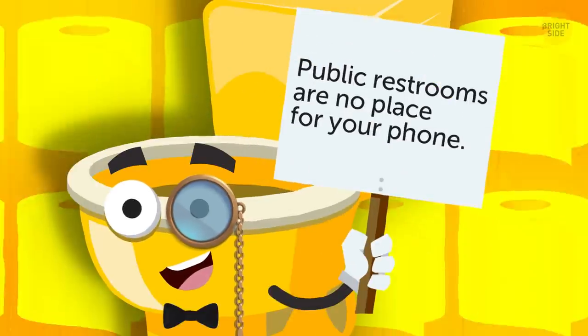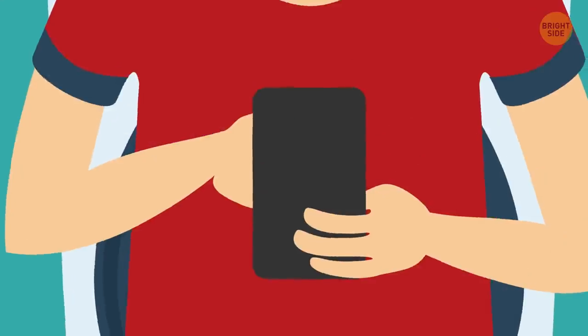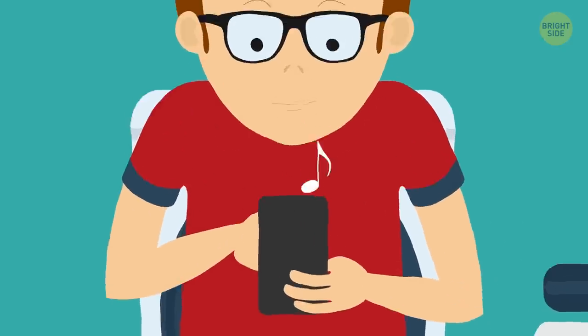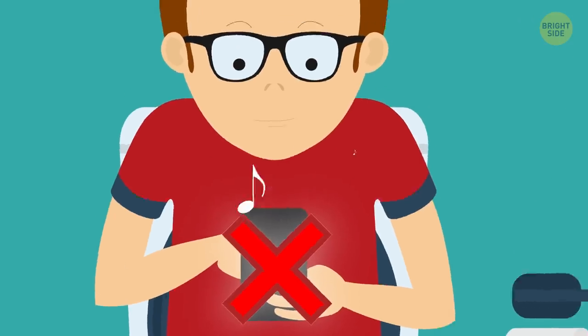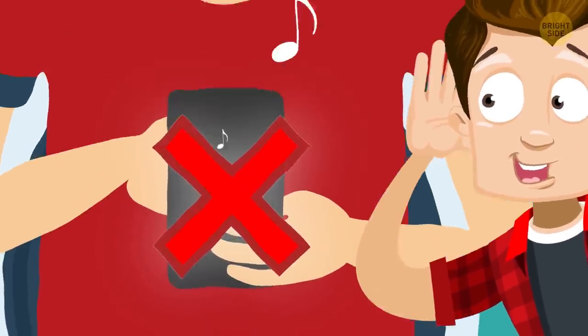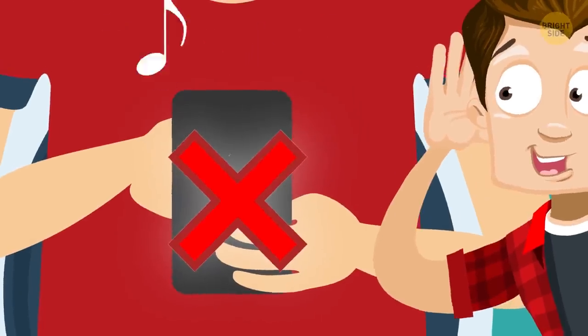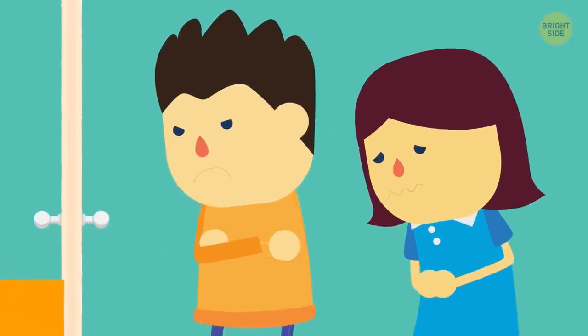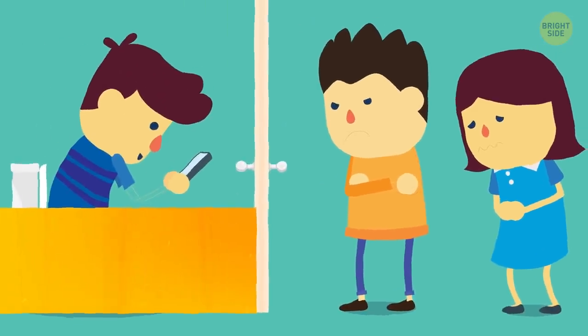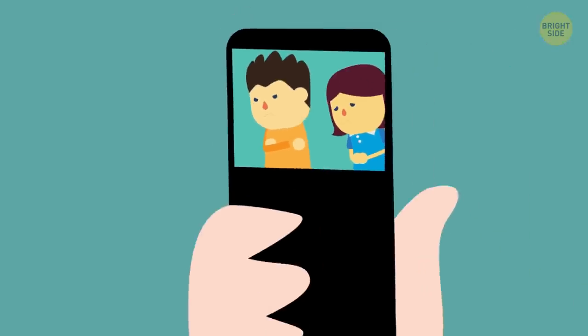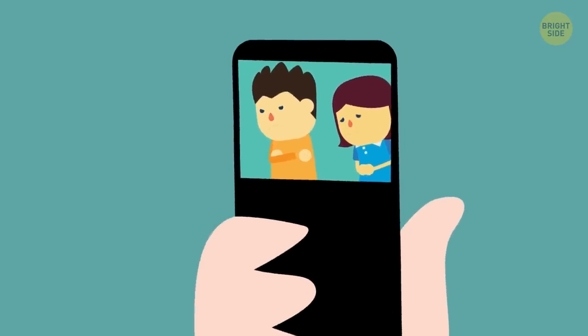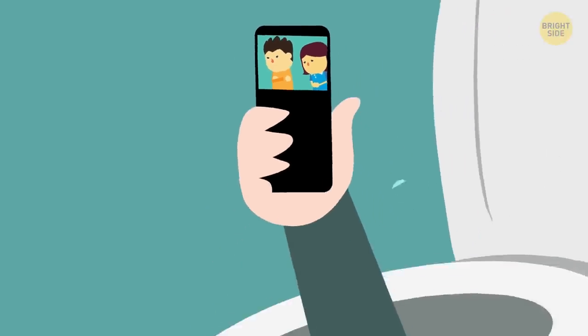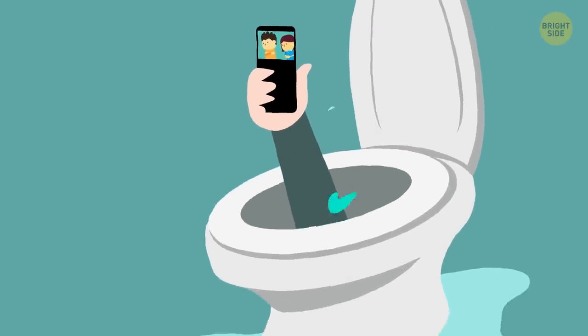Public restrooms are no place for your phone. Unless you have it on silent mode, it's best to refrain from playing games on your phone in a public restroom. It's rude to make other people hear the sounds. Especially the ones coming from your phone. This goes for taking phone calls, too. Even if you're waiting in line, no one wants to hear your phone conversation while they're sitting on the potty. Even just having your phone out could put people on edge. In our world of social media, no one really knows what you're doing with that phone, in the bathroom of all places.